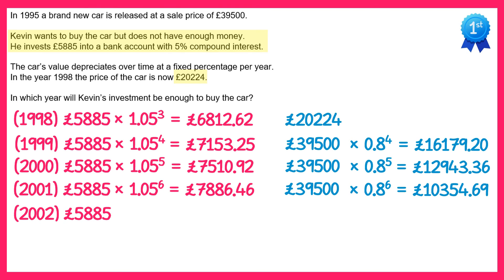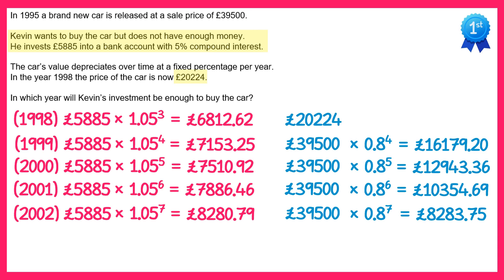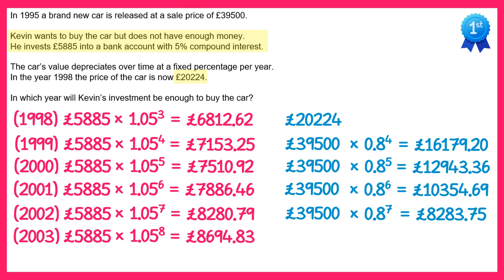In 2002, the investment is £5,885 times 1.05 to the power seven, and the car's value is £39,500 times 0.8 to the power seven. Unfortunately still not enough — very, very close, but not quite. In 2003, we multiply by 1.05 to the power eight for the investment, and by 0.8 to the power eight for the car's value.